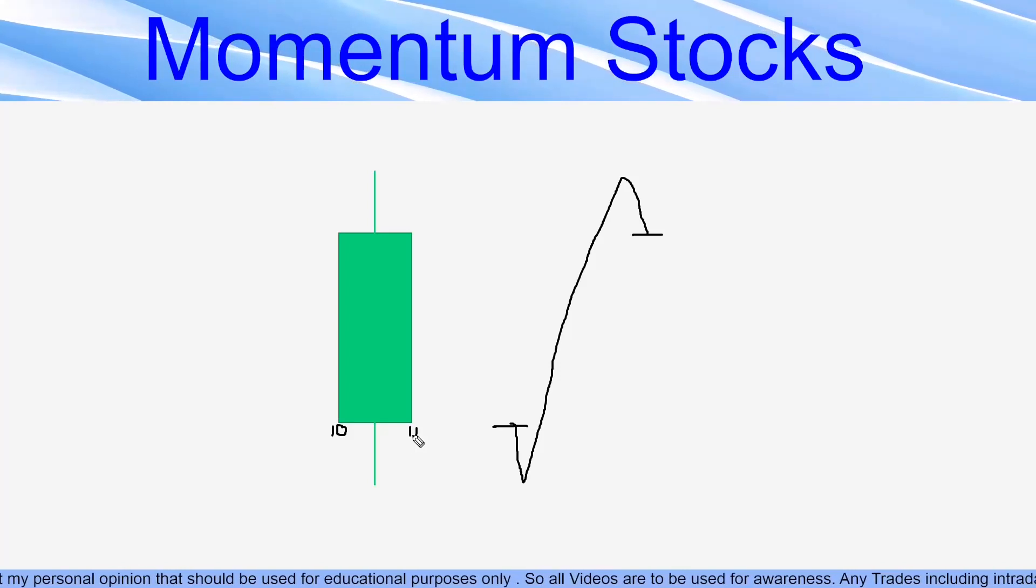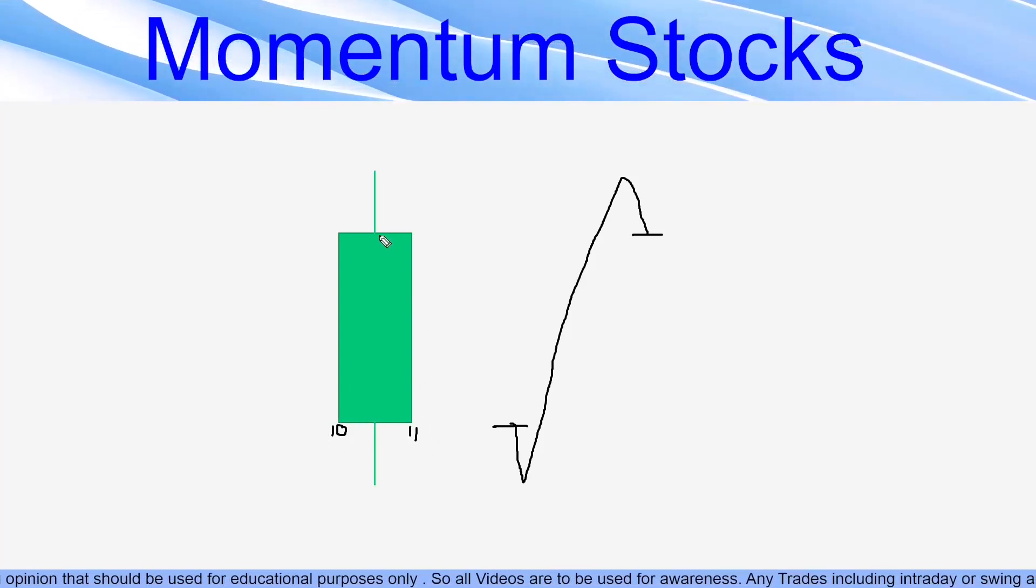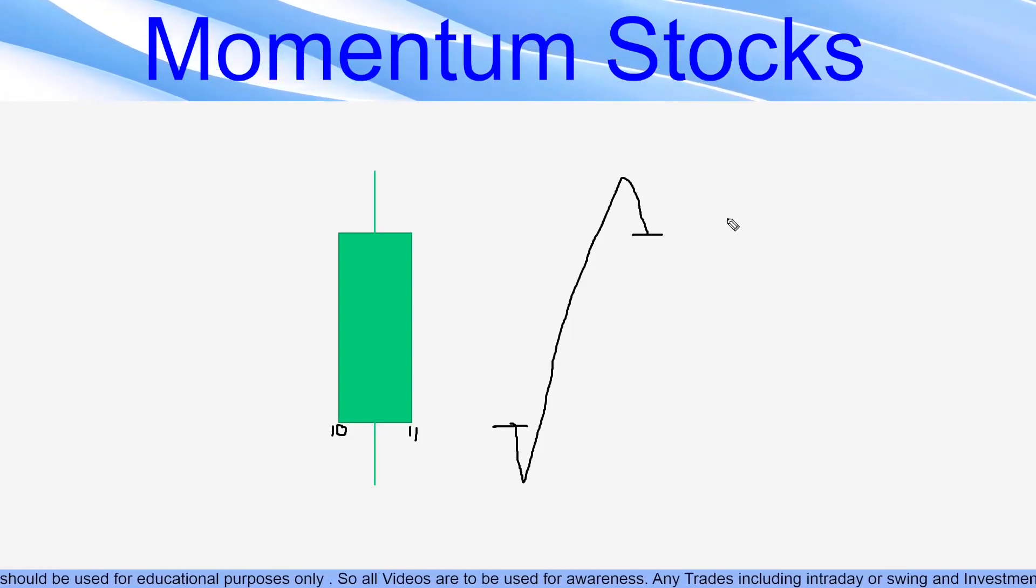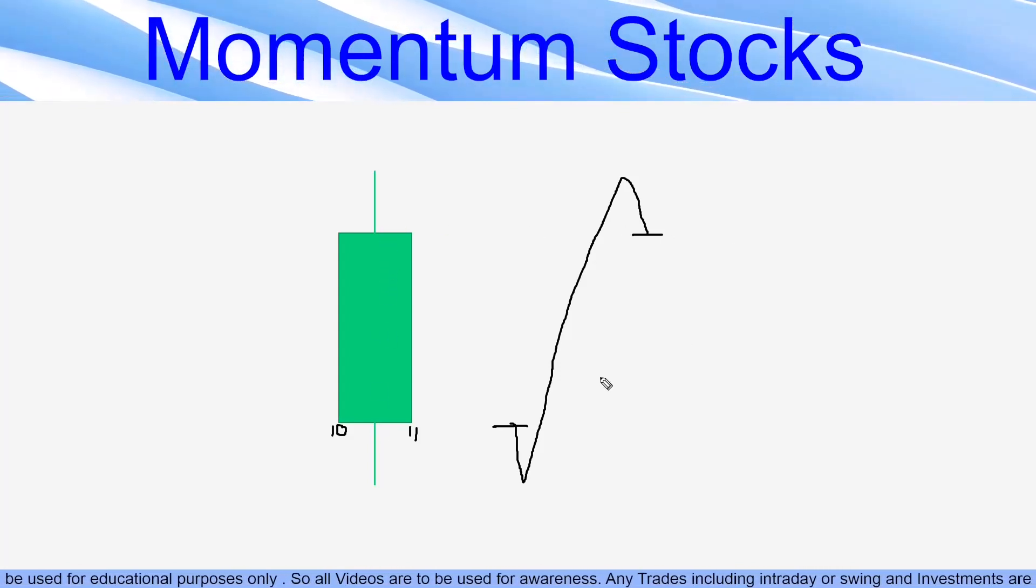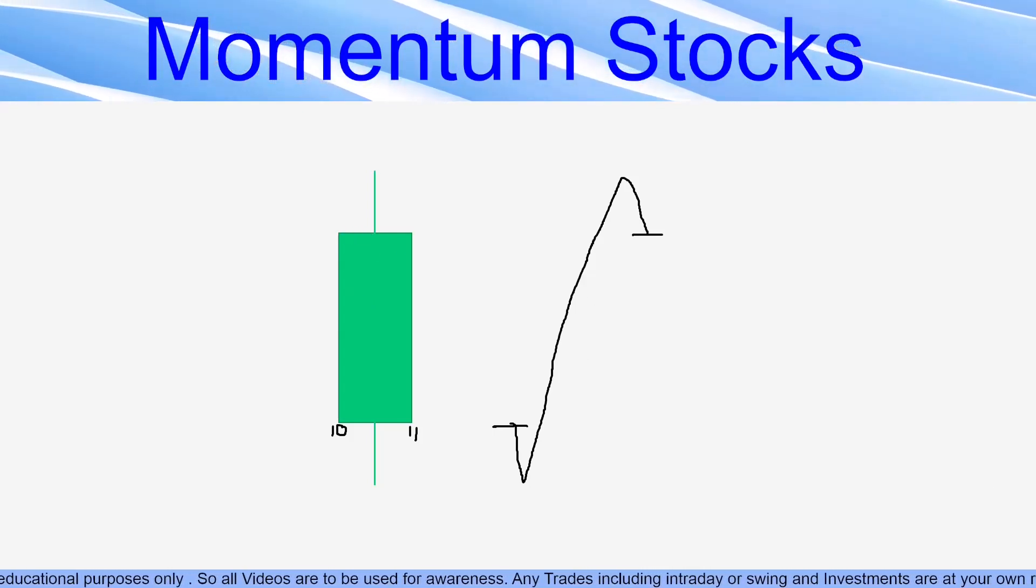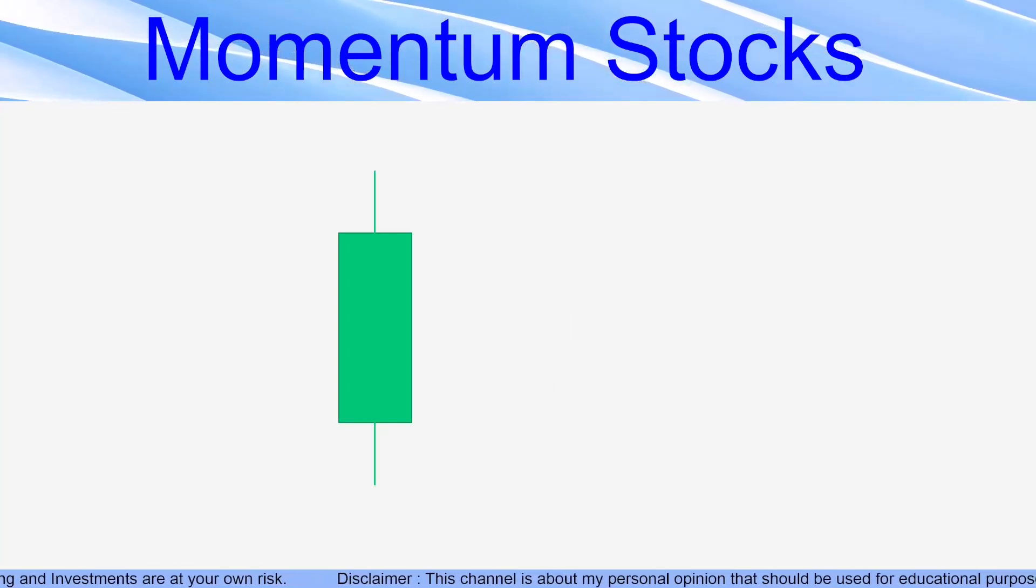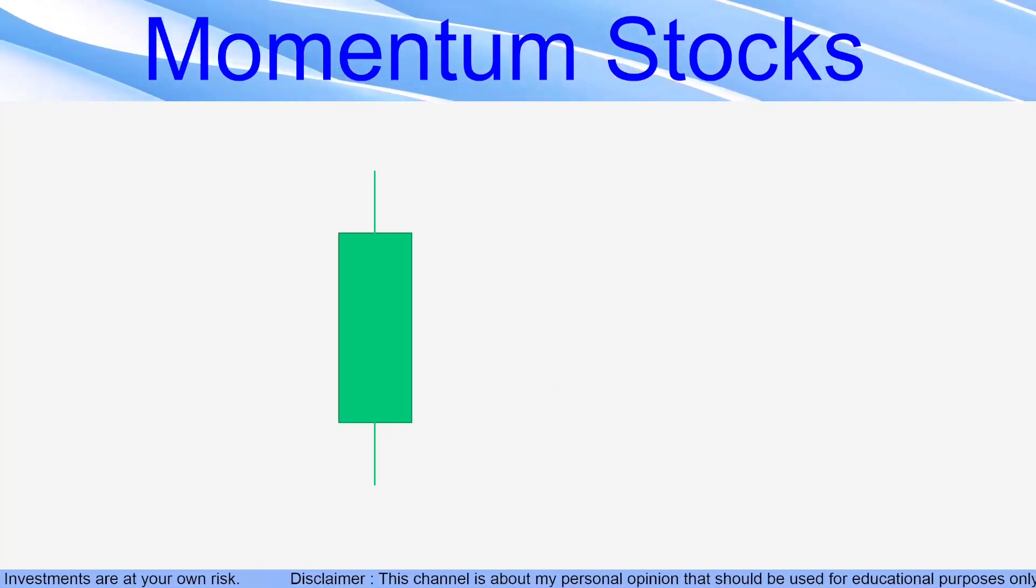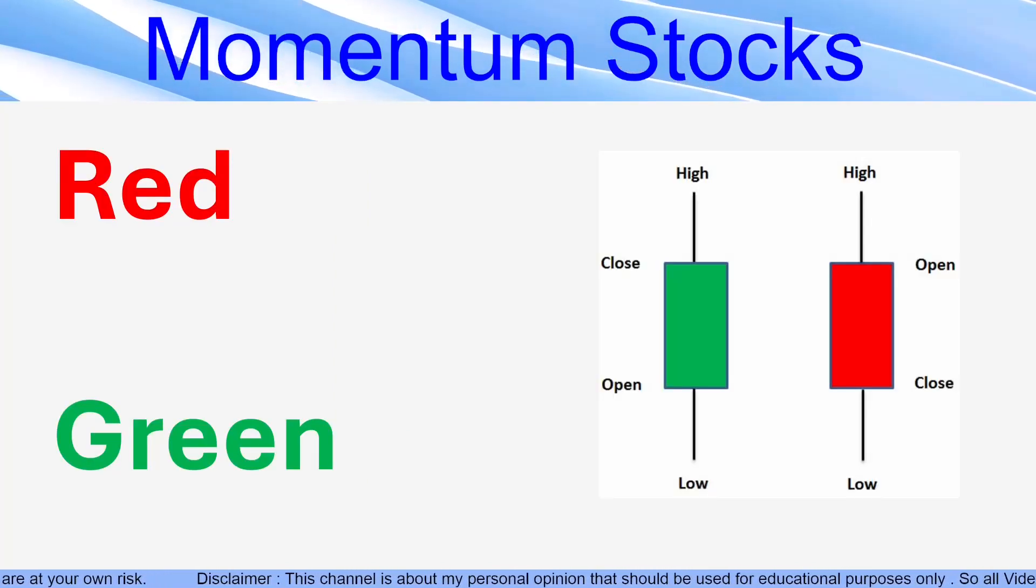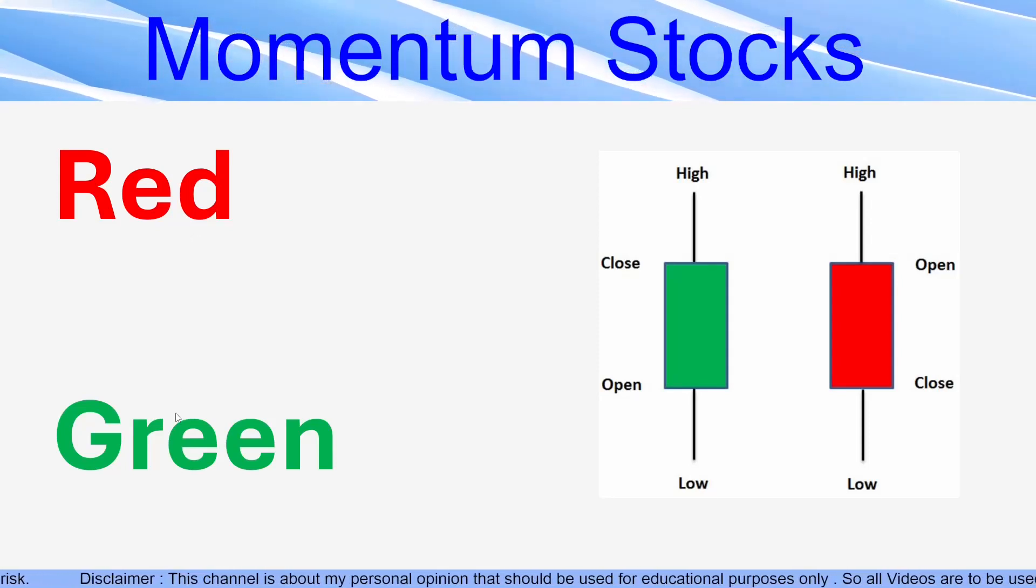So from 10 to 11 o'clock, between this one hour interval or one hour time frame, this was the movement of the stock. So that is how every candle is formed. I hope I made that part clear. And now coming to the color of a specific candle. For that, candlesticks are mostly of two colors: red and green.